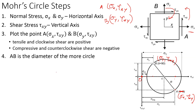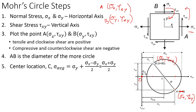Now we need to find the center location of the circle. We know the positions of σx and σy along the horizontal axis. Because Points A and B form a diameter, the two triangles formed are symmetric, and we can show that the center lies at a distance equal to (σx − σy)/2 from σy, which gives us the center location.